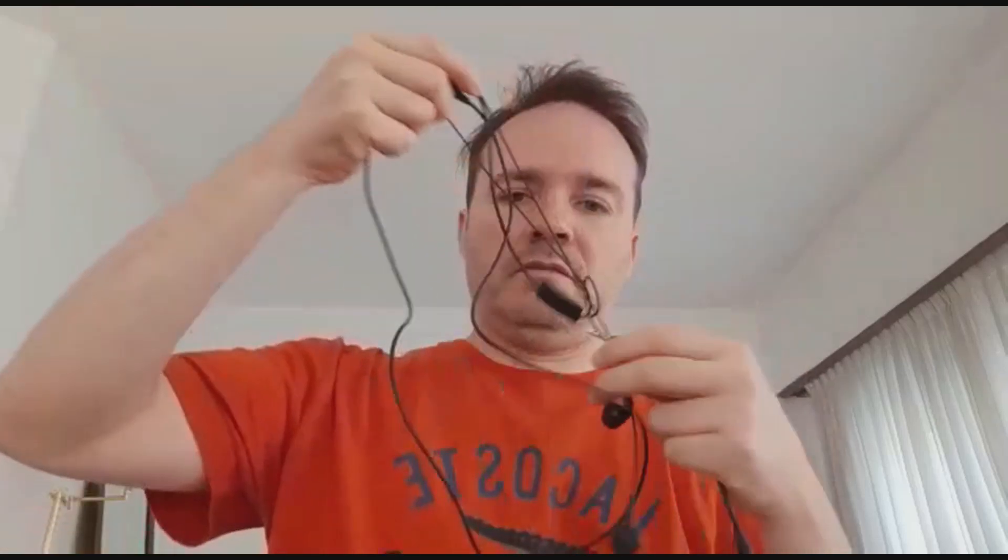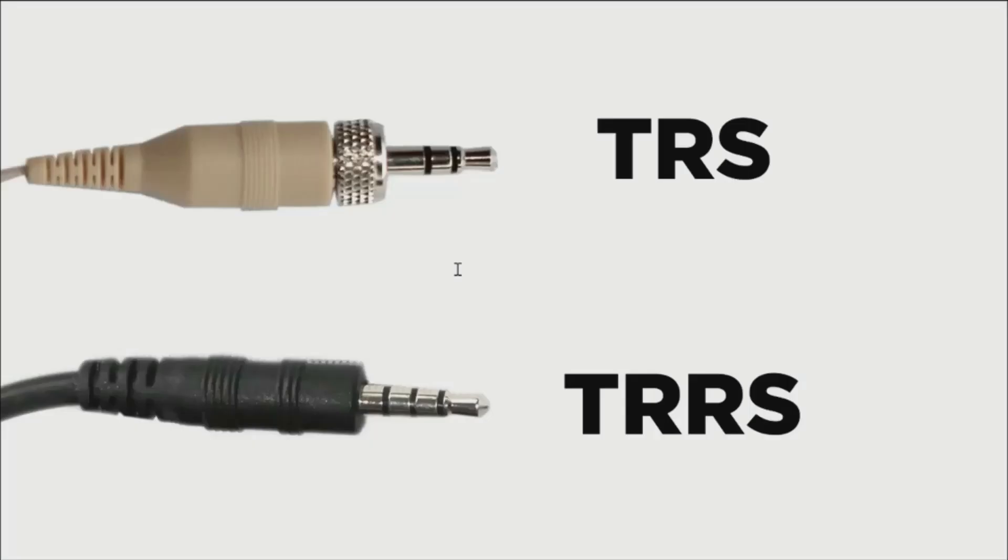First I would like to show you the adapter. As you can see here, we have two jacks — both are 3.5 millimeters — and on the generic earphone you have one jack, also 3.5 millimeters. So what's the difference? The difference is that this one has one ring inside and this one has two rings inside. That means that this can handle input and output, and this can handle only input and output one way only.